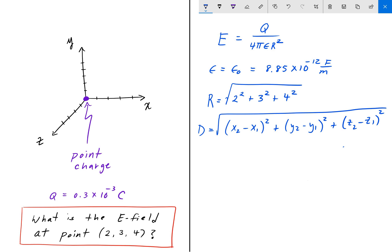But because we have it at the origin, we simply just get what we wrote down. And that's equal to the square root of 29.